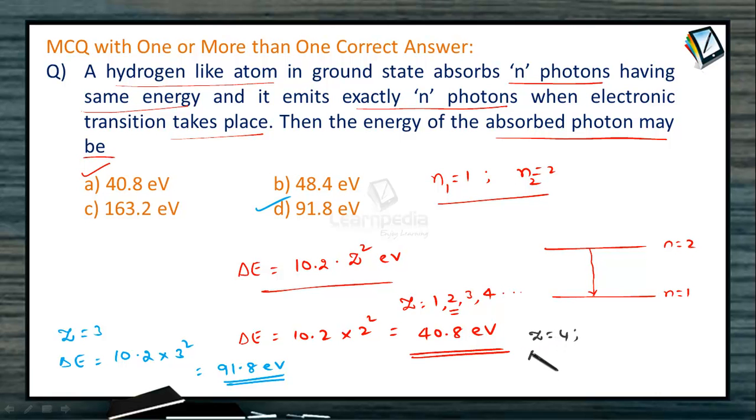When we take Z=4, then ΔE = 10.2 × 4² = 10.2 × 16 = 160 + 3.2 = 163.2 eV. This will become the energy of the photon, thereby option C is also correct.